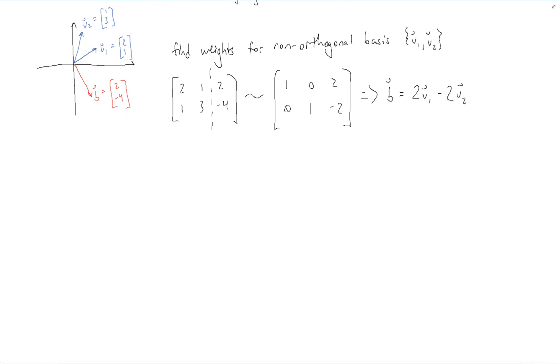However, if we try to do the same kind of thing with an orthogonal basis by using what we just learned. So now suppose that our basis will keep the same V1. So V1, in this case, will be still 21. But now V2 will be orthogonal to it. It's going to be negative 12. So this is V2.